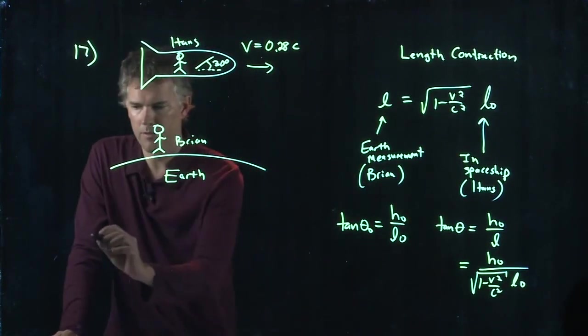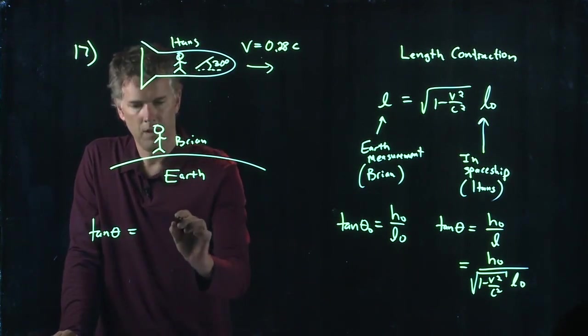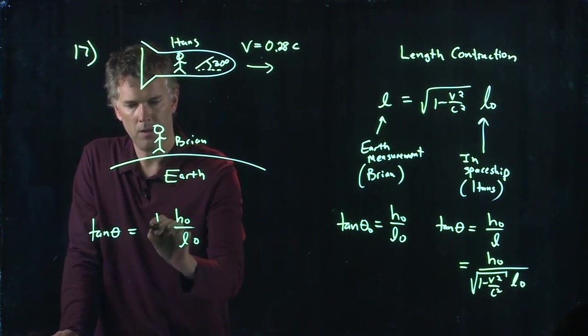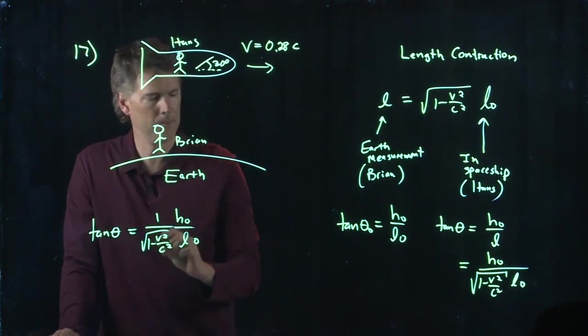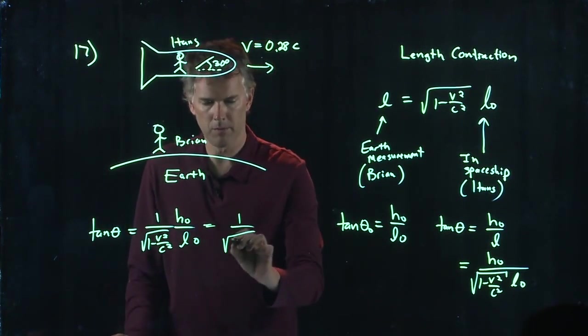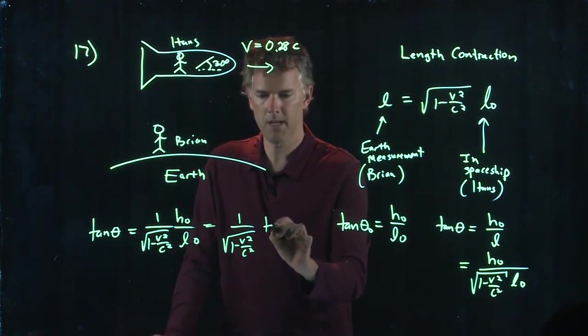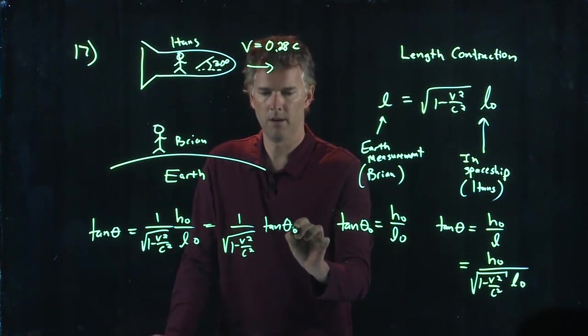And so now you can put all this stuff together. And so we have the following. Tangent of theta equals H-naught over L-naught, one over square root, one minus V-squared over C-squared. But that is one over the square root, one minus V-squared over C-squared, times the tangent of theta-naught.